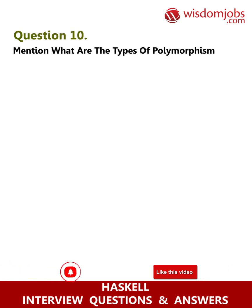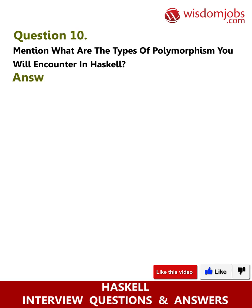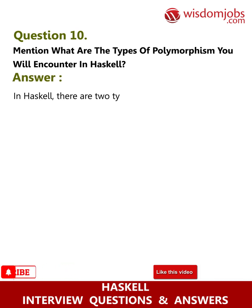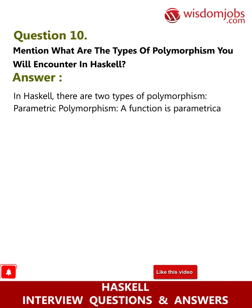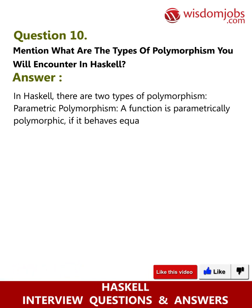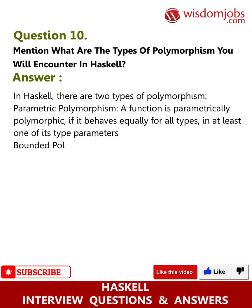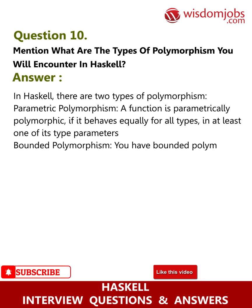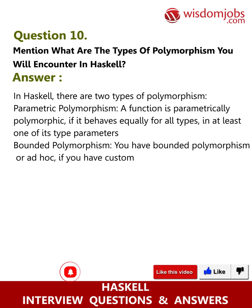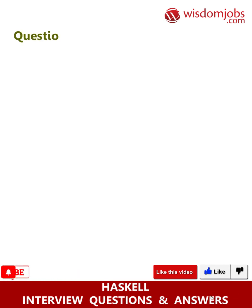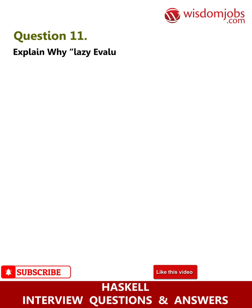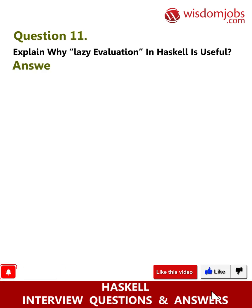Question 10: Mention what are the types of polymorphism in Haskell. Answer: In Haskell there are two types of polymorphism. Parametric polymorphism: a function is parametrically polymorphic if it behaves equally for all types in at least one of its type parameters. Bounded polymorphism (also called ad hoc): you have custom behavior for a certain set of types.